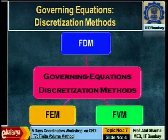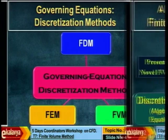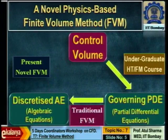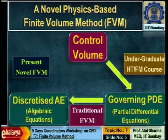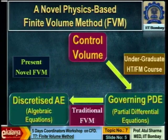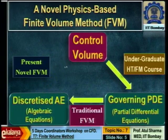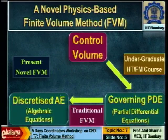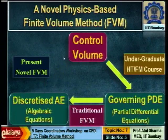By this time you already know there are different types of discretization methods: finite difference, finite volume, and finite element — and here we discuss the finite volume method. There are two approaches to get the discretized algebraic equation: from the governing partial differential equation, or directly from the control volume. I prefer the latter, which I call the physics-based control volume method, as it is more easy for students to understand.